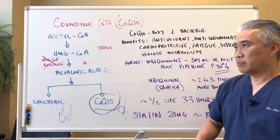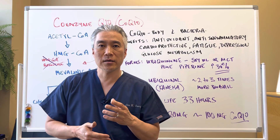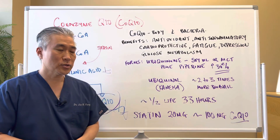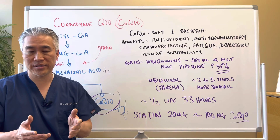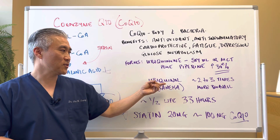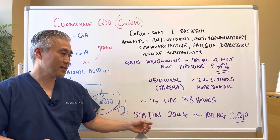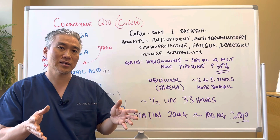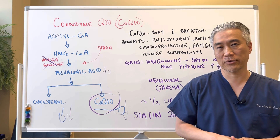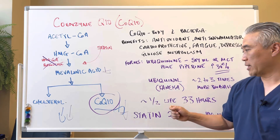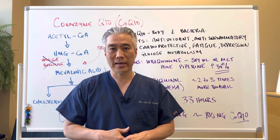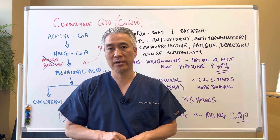Clinical nugget: if you're on a statin medication — a cholesterol lowering medication — it's important to take CoQ10 because it depletes it. So if you're taking 20 milligrams of a statin medication, you want to take about 100 milligrams of CoQ10, or a little bit less of the ubiquinol because it's more bioavailable. For every 20 milligrams of statin you're taking, you want to take 100 milligrams of CoQ10. So if you're taking 40 milligrams, you want to make sure you're taking about 200 milligrams of CoQ10. Obviously with medications, you need to talk to your physician — I am not yours — but talk to your physician about taking CoQ10 if you're on a statin medication.